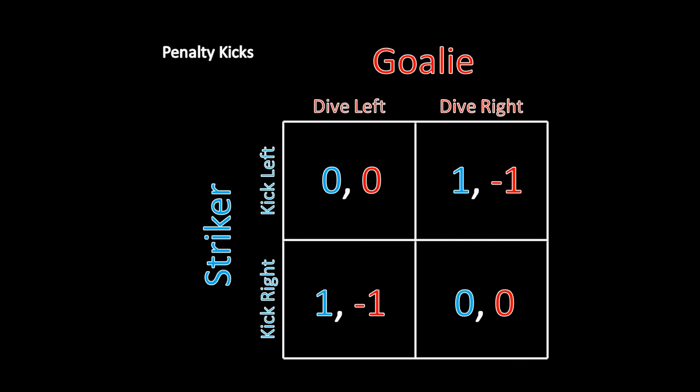Could it be that the striker predictably kicks left and the goalie predictably dives left? Well, very quickly you would realize that can't be guessed ahead of time. If the goalie were definitely going to dive left, the striker wouldn't want to kick left — he'd want to kick right and score a goal. So they can't reliably be kicking left and diving left. Can they reliably be kicking right and diving left? Again, no. If the goalie knew the striker were going to kick right, the goalie would want to switch to diving right to stop that shot.